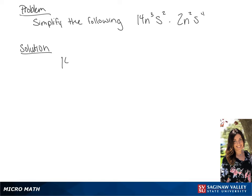Our problem is 14n cubed s squared times 2n squared s to the fourth power. We're going to multiply the 2 and the 14, which gives us 28.